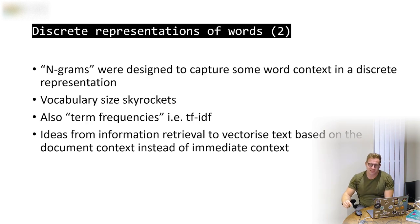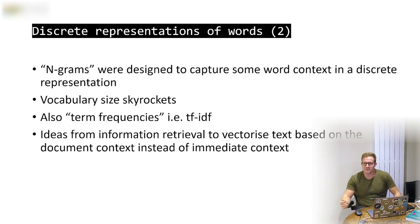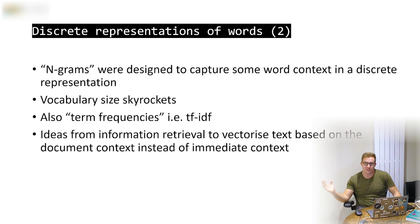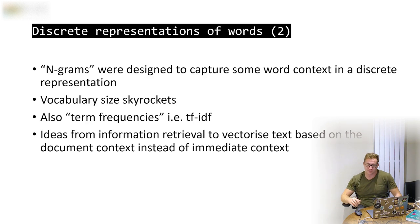N-grams were designed to capture some word context in discrete representations, but unfortunately the vocabulary size skyrockets — two adjacent words can be treated as one token and one-hot encoded. There was also TF-IDF, a popular algorithm using ideas from information retrieval to vectorize text based on document context rather than immediate word context.